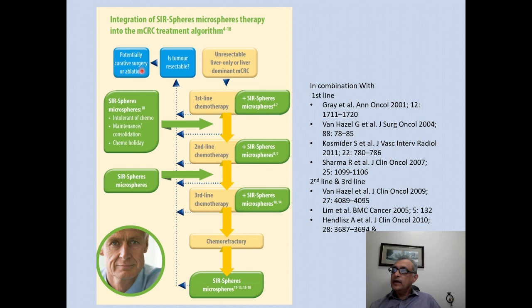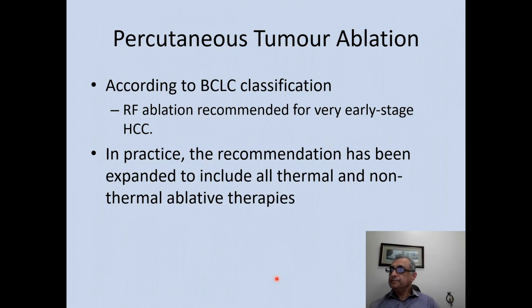If the tumor is unresectable with liver-only or liver-dominant disease, SIRT can be integrated between first, second, or third line chemotherapies to improve overall survival in patients with unresectable liver-only or liver-dominant metastatic colorectal disease. Regarding percutaneous tumor ablation, according to the BCLC classification RFA is only recommended for very early stage HCC, though in practice the recommendation has been expanded to include all thermal and non-thermal ablative therapies.